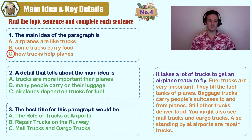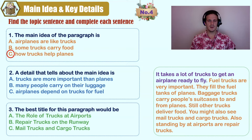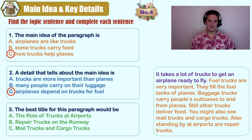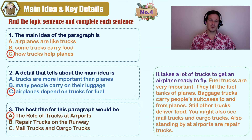Which detail is answered in this paragraph? A) trucks are more important than planes, B) many people carry on their luggage, C) airplanes depend on trucks for fuel. A is incorrect because the point of the truck is to help the plane do its work. B is not really related to airplanes or trucks — it's related to the passenger. C is our best and only answer. For the title: A) The role of trucks at airports, B) Repair trucks on the runway, C) Mail trucks and cargo trucks. The answer is A — the role of trucks at airports. B is a nice guess but not as good as A, and C is not very related to this article.